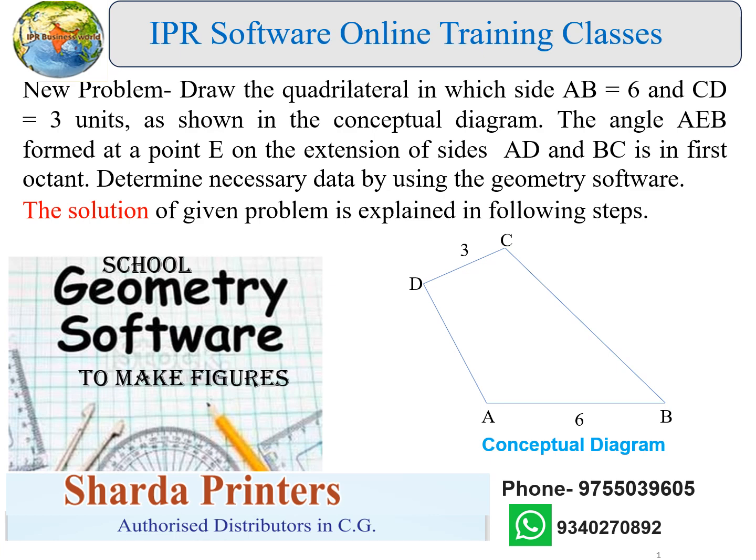New problem: draw the quadrilateral in which side AB is equal to 6 and CD is equal to 3 units, as shown in the conceptual diagram. The angle AB formed at a point E on the extension of sides AD and BC is in the first octant. The solution of the given problem is explained in the following steps.